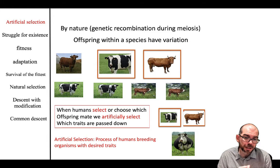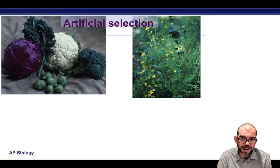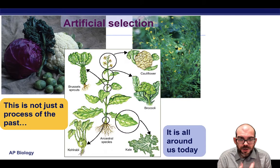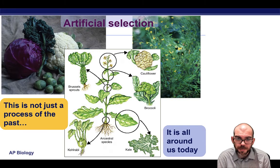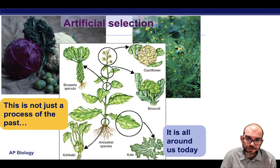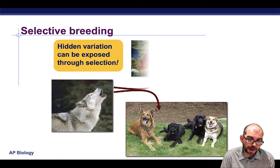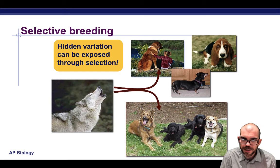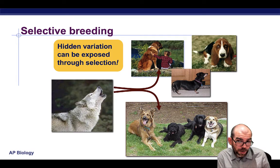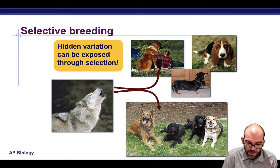Darwin spends a good amount of time in his book discussing artificial selection. An ancestral mustard plant has been selectively bred to produce things we eat today like Brussels sprouts, cauliflower, broccoli, and kale — done by farmers selecting specific traits over generations. This is also how we've gotten man's best friend. All currently existing dog species are actually descendants from wolves. We've been selectively breeding them based on desired traits, giving us dogs that look like wolves, like a husky, to exaggerated forms like a pug, dachshund, or basset hound.